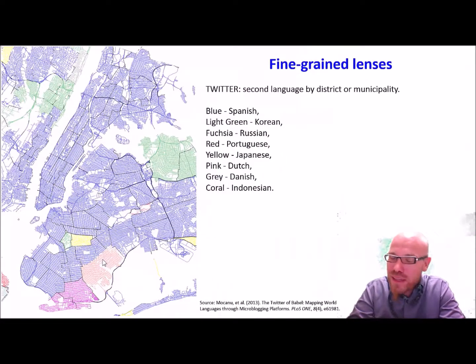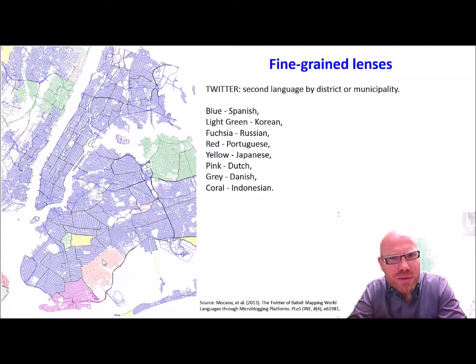For example, previously if you wanted to understand what languages are spoken in New York, we had to do a survey which is very expensive. Nowadays, we simply look at Twitter and what languages are spoken there. This is a map that was extracted from Twitter data, and we see that down here in Brooklyn there are certain enclaves of Korean and Japanese and Dutch who live there, and we can simply identify because they leave a digital footprint.